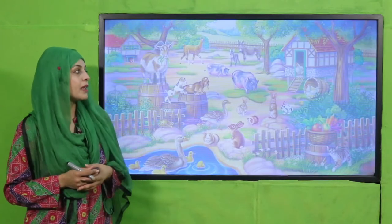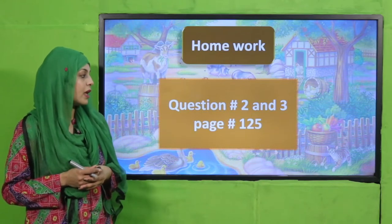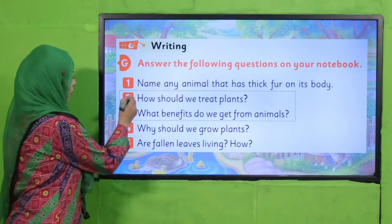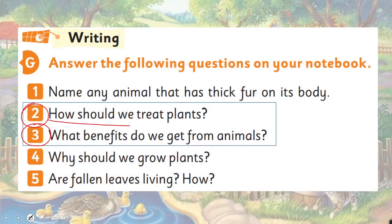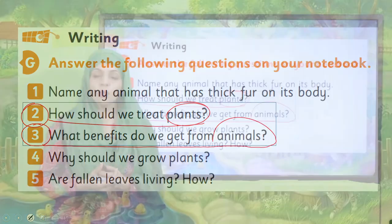Now is the time for homework. Questions 2 and 3 on page 125 — you will do them in your notebooks. How should we treat plants? By watering them, not plucking them, and keeping them clean. You can also take help from your books. What benefits do we get from animals? We get food, transport, and joy from animals.